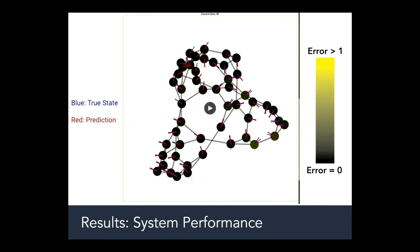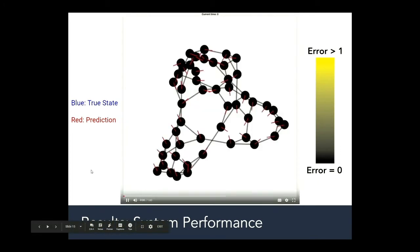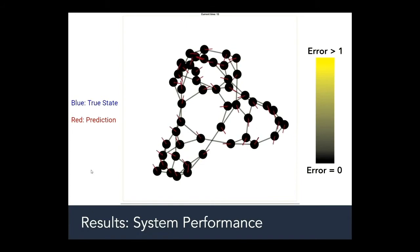Here we have a movie essentially of the predictions of all of the nodes in our system. What you're seeing is that each node has two lines coming out of it, a red one and a blue one. The blue line represents the true phase angle of that node while the red one represents our predicted phase angle. A black node is a node where the prediction is very accurate. A yellow node has a large error.